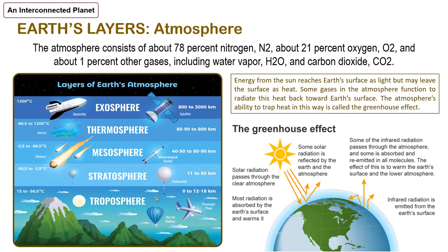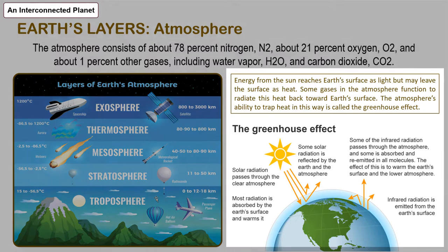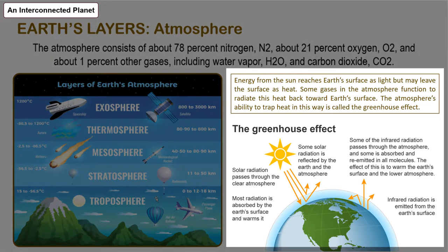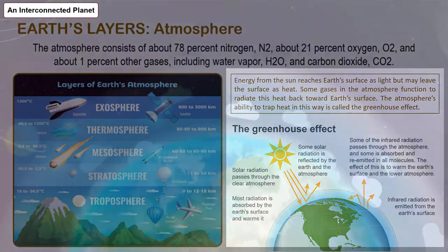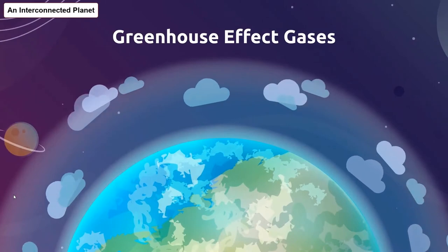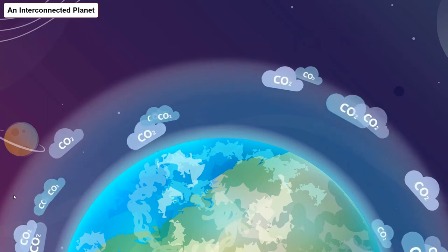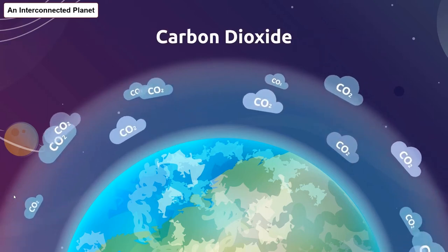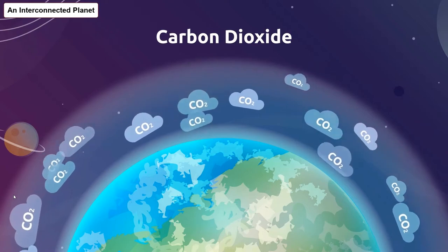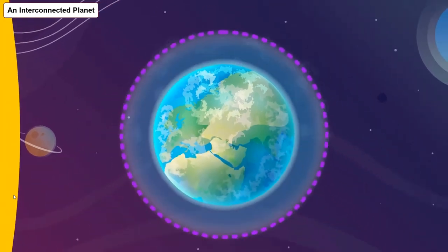In contrast, some gases in the atmosphere direct energy towards the Earth's surface. Energy from the sun reaches the Earth's surface as light, but it can leave the surface as heat. Some gases in the atmosphere function to radiate this heat back towards the Earth's surface. The atmosphere's ability to trap heat in this way is called the greenhouse effect. The atmospheric gases that contribute to this effect are called greenhouse gases, and the concentrations of greenhouse gases such as carbon dioxide and methane affect the amount of the sun's heat that is being trapped by the atmosphere.